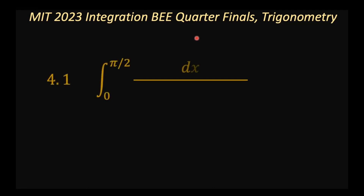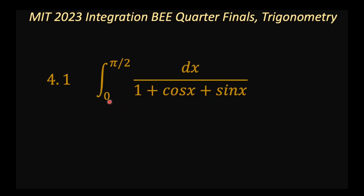The problem is the integration of 1 over (1 plus cosine x plus sine x), integrating from x equals zero to pi over two.